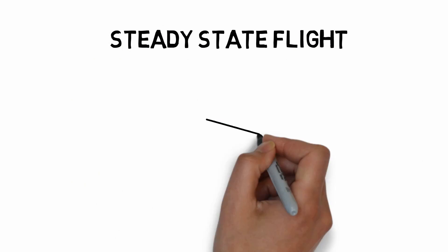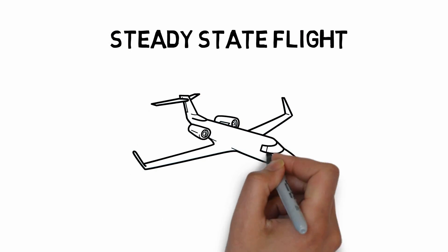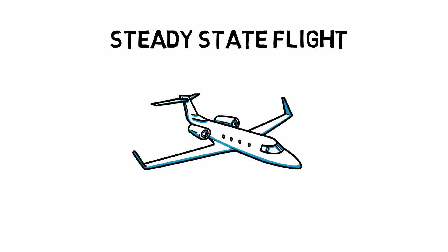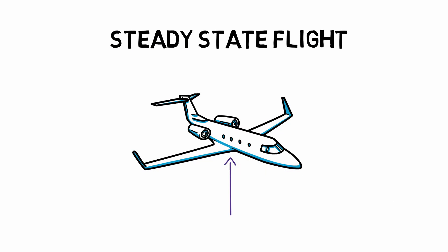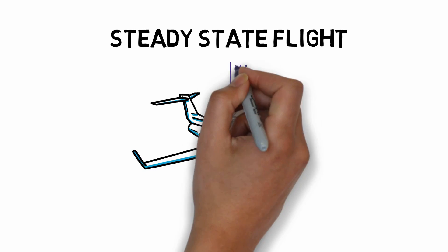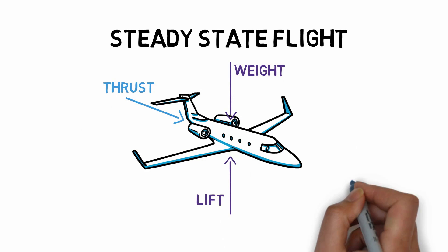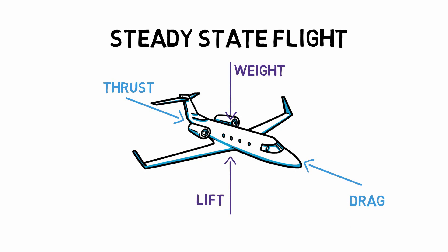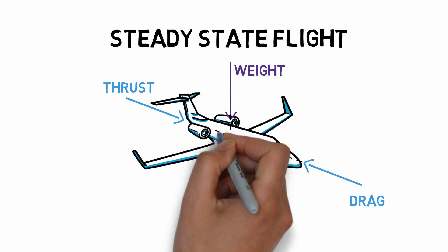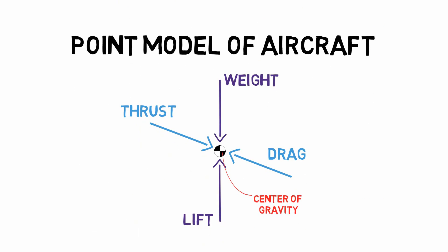Let's first take a look at an aircraft in steady-state flight. You can make a simple representation of the loads acting on the aircraft by four concentrated loads in equilibrium. The lift generated is equal in magnitude and opposite in direction compared to the weight of the aircraft. The same is true for the thrust generated by the engine and the drag, which are also in equilibrium. Here we assume that all the forces are acting in the center of gravity of the airplane and that the airplane can be represented by a single point.